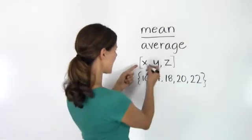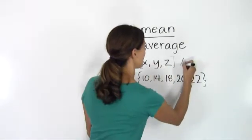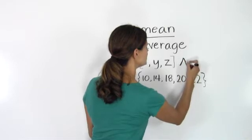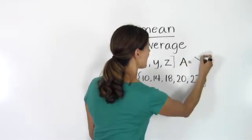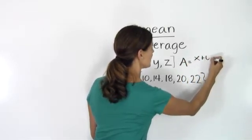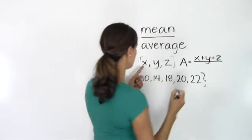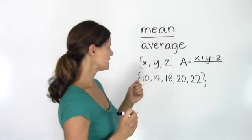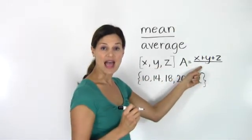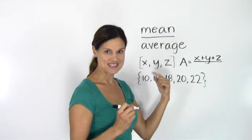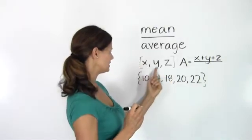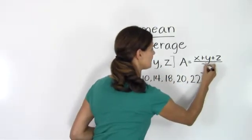So if we have a set {x, y, z}, I can find the average by adding up x + y + z for the total of all my values, and then I divide by the number of values in my set: one, two, three. Divide by three.